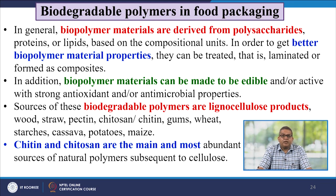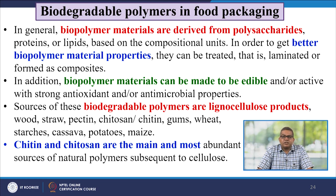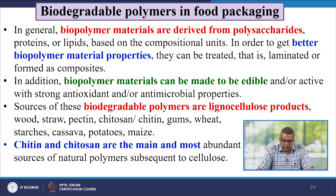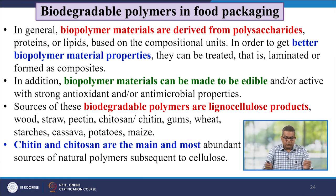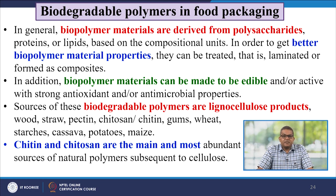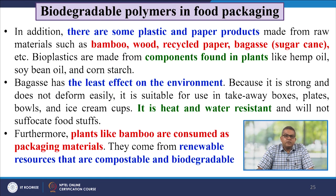In general, biopolymer materials are derived from polysaccharides, proteins, or lipids based on their compositional units. To get better properties, they can be laminated or formed as composites, and can be made edible and active with strong antioxidant and antimicrobial properties. Sources of biodegradable polymers include lignocellulose products, wood, straw, pectin, chitosan, chitin, gums, wheat, starch, cassava, potatoes, and maize. Chitin and chitosan are the most abundant natural polymers subsequent to cellulose.